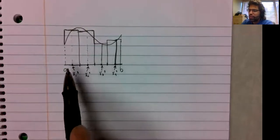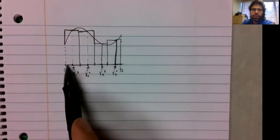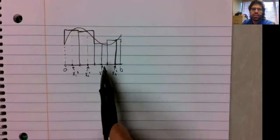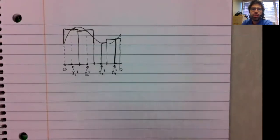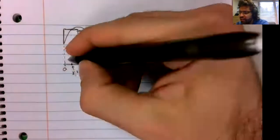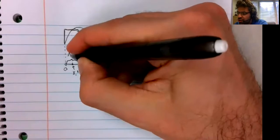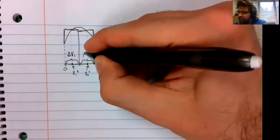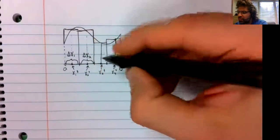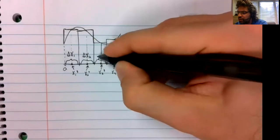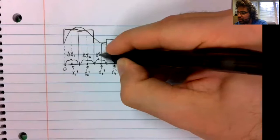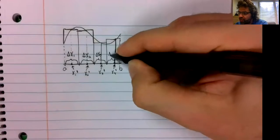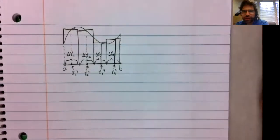For the areas, we need the widths of these bases. Let's not assume they're the same. Let's call this delta X1, delta X2, delta X3, and delta X4.